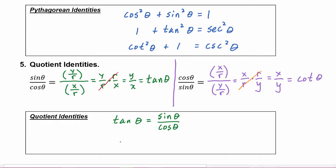So we can write in the box that cotangent of theta is equal to cosine theta over sine theta.